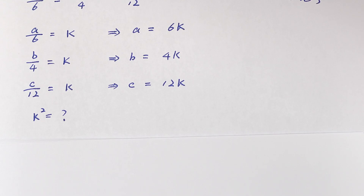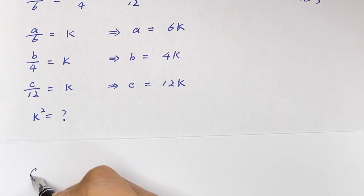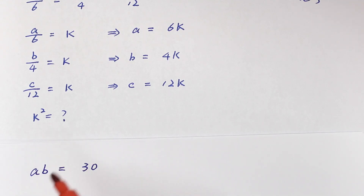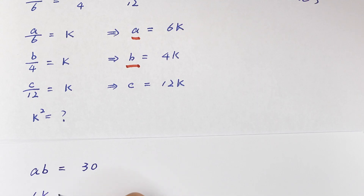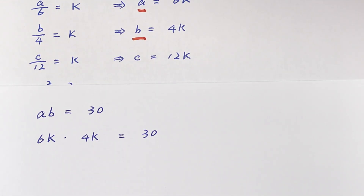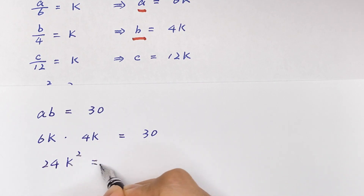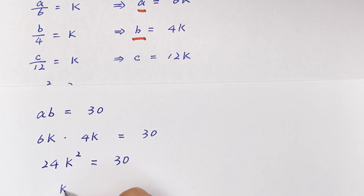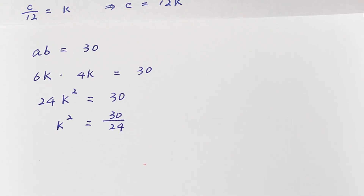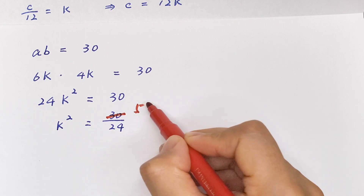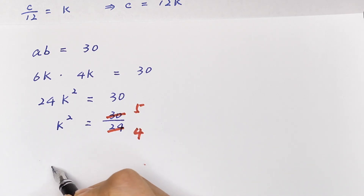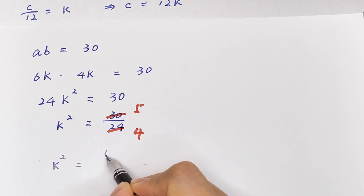Step 2: we are going to find the value of k². From a·b = 30, we know a = 6k and b = 4k, so 6k times 4k equals 30. Multiplying gives 24k² = 30. Dividing both sides by 24 and simplifying — dividing numerator and denominator by 6 — k² is equal to 5 over 4.